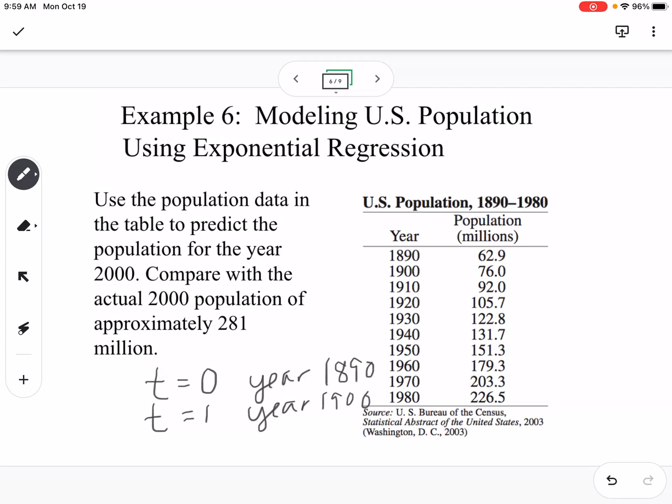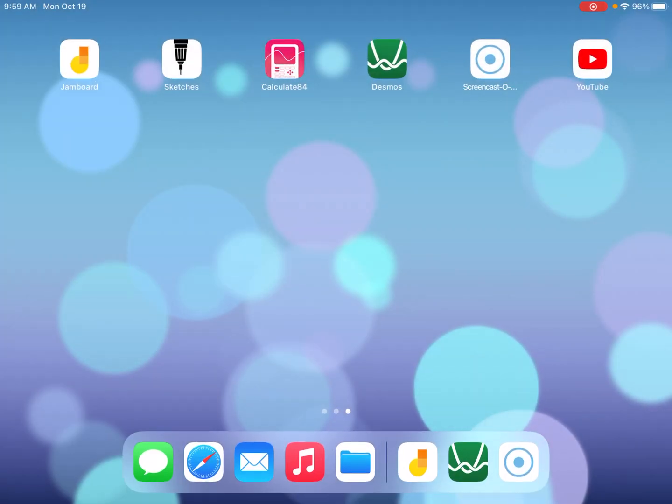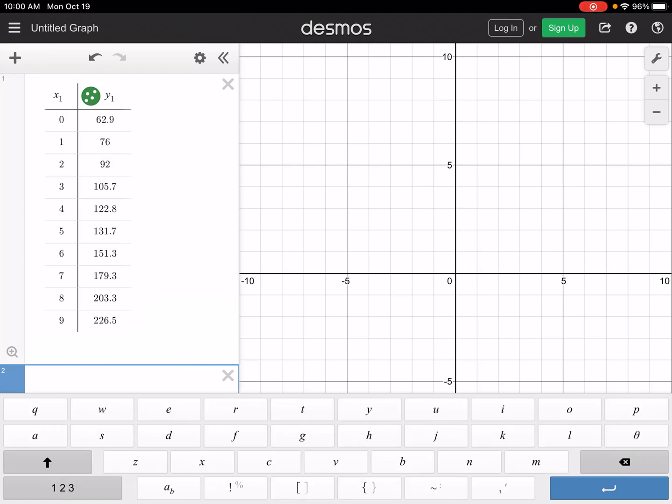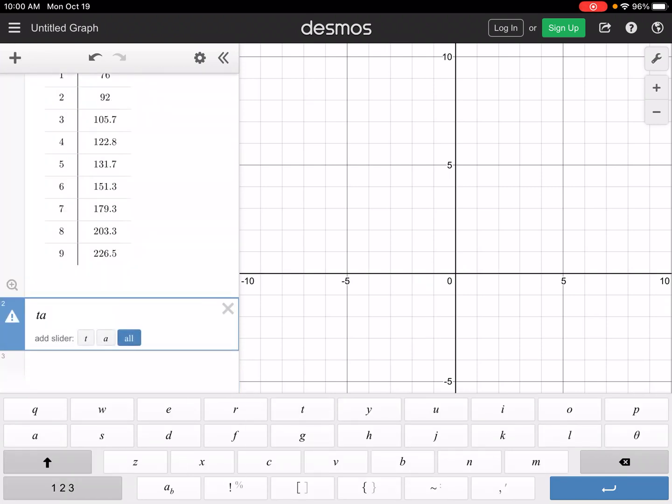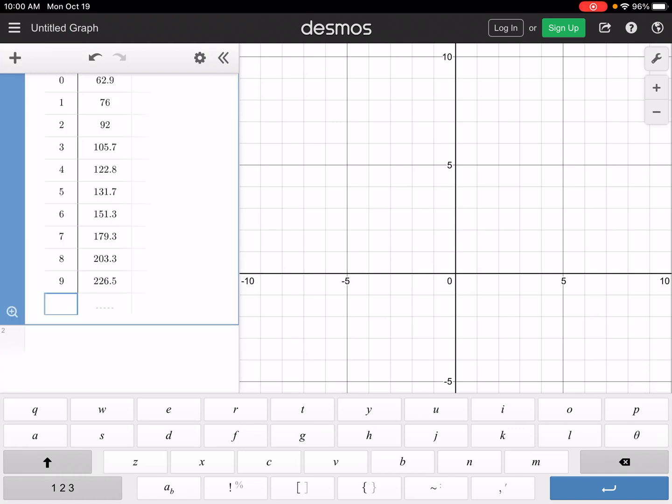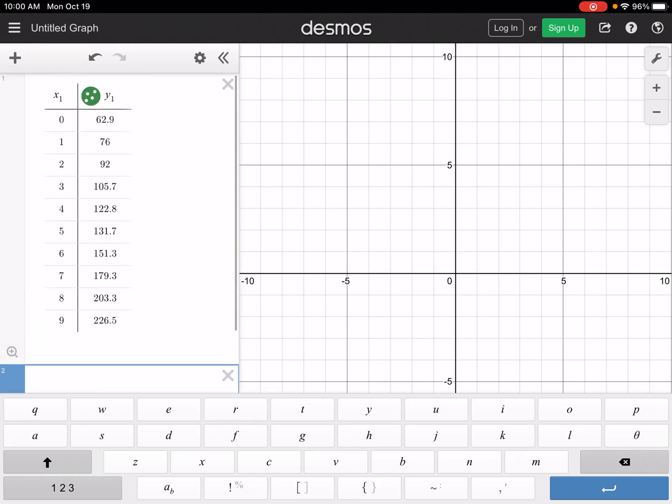I got this set up in our Desmos app, so you didn't have to watch me input all the numbers. I went to Desmos and I typed the word table, and then it puts in a table for me. I typed the word table, and then you can see in my x's, I went 0, 1, 2, 3, 4, because we're saying T equals 0 is 1890, and T equals 1 is 1900. And then my y values are just the same y values in my table.